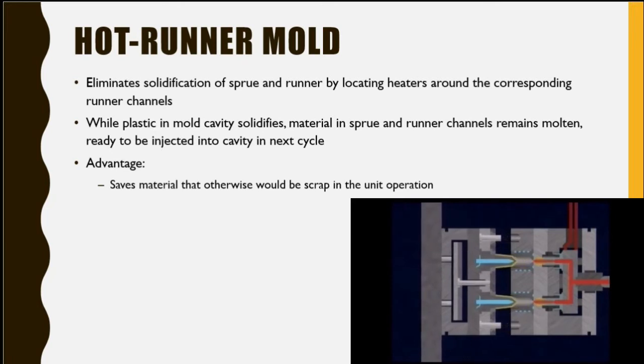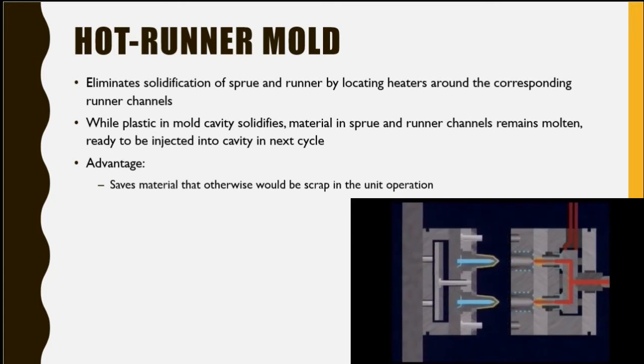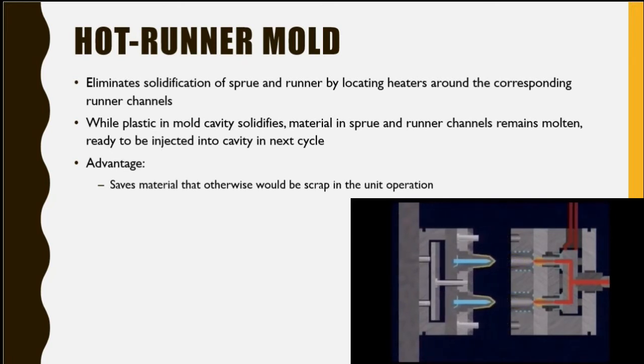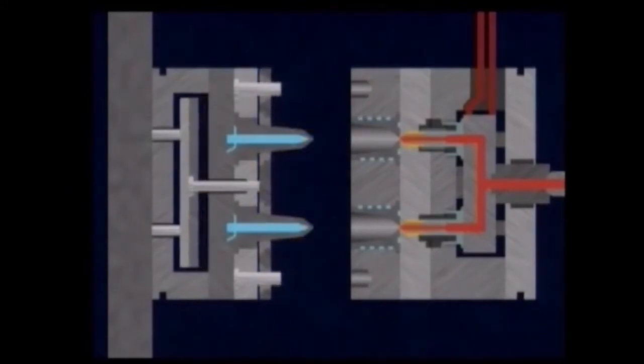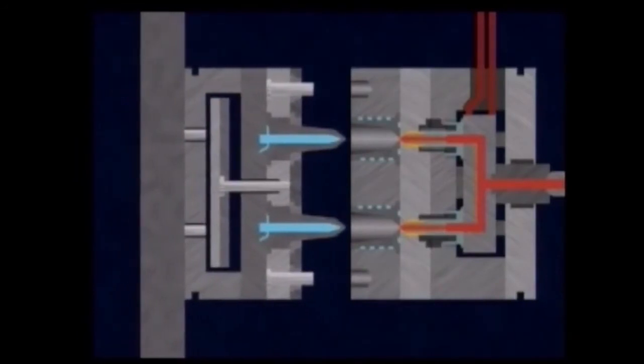The last mold type is the hot runner mold. The heated runner system is contained in a plate of its own and does not open during the molding cycle. Because of this, hot runner molds generate no runners or sprues. For this reason, hot runner molding — also known as runnerless molding — is fast and efficient.